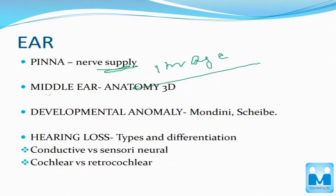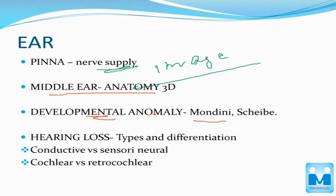The second topic is the three-dimensional image of the middle ear. A question per se would come from this topic, but having a three-dimensional image of the middle ear in your mind will help you understand the pathophysiology of various diseases and even in otoscopic image identification.